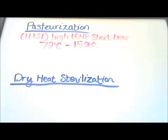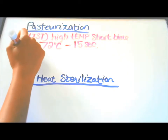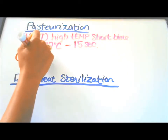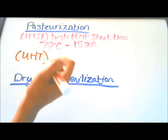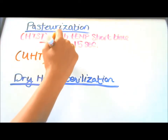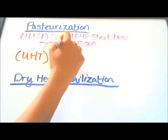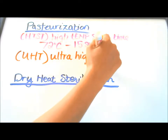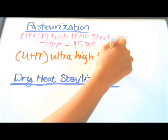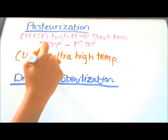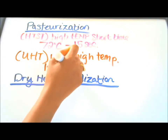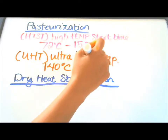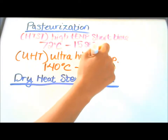HTST also helps keep milk safe when refrigerated. The second method is U-H-T — ultra high temperature — which uses a temperature of 140 degrees Celsius for 4 seconds.